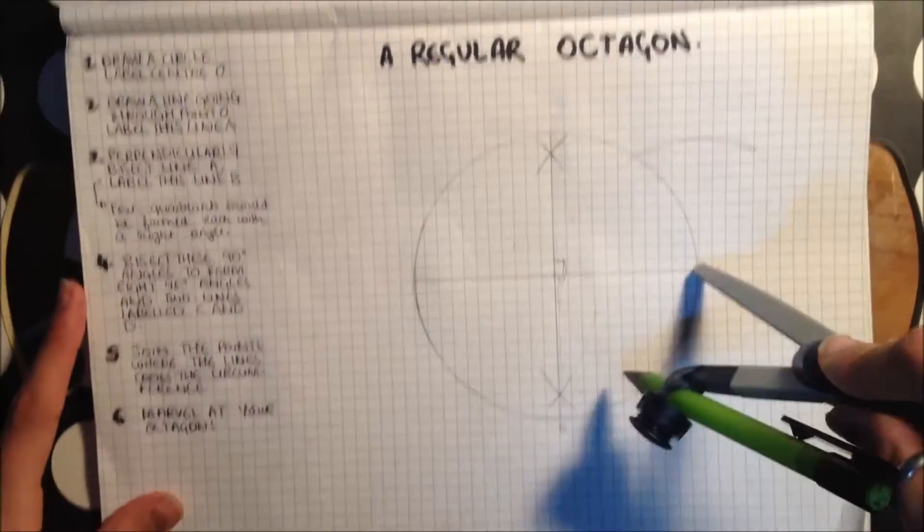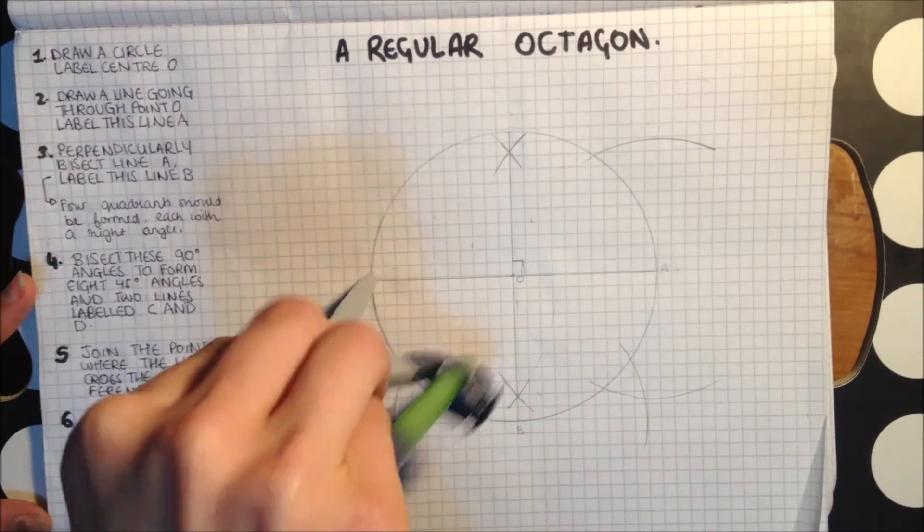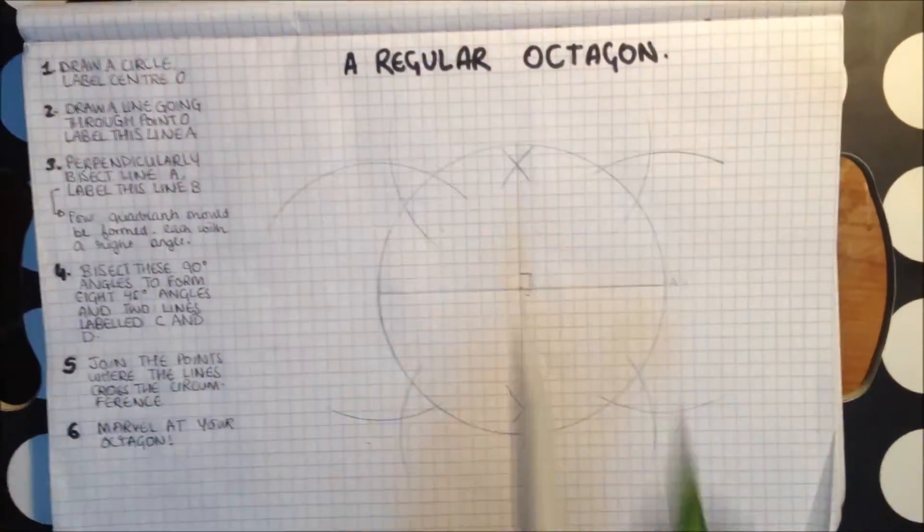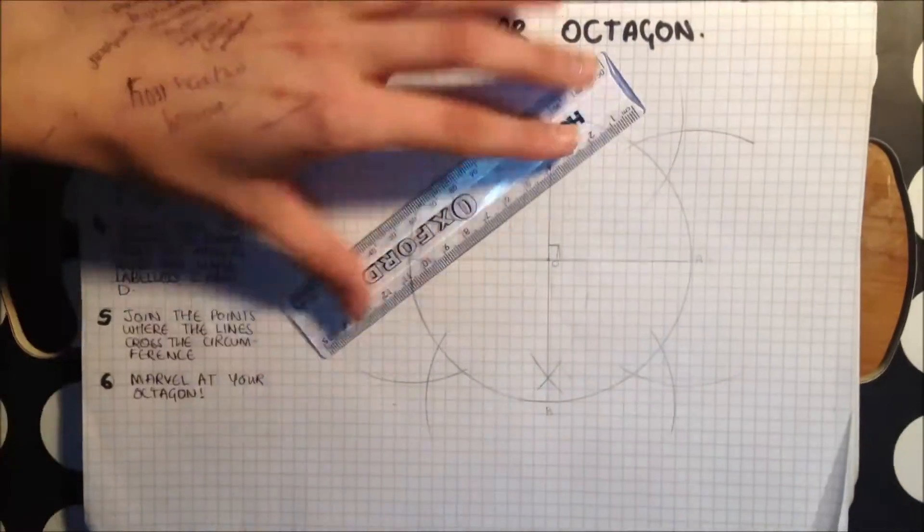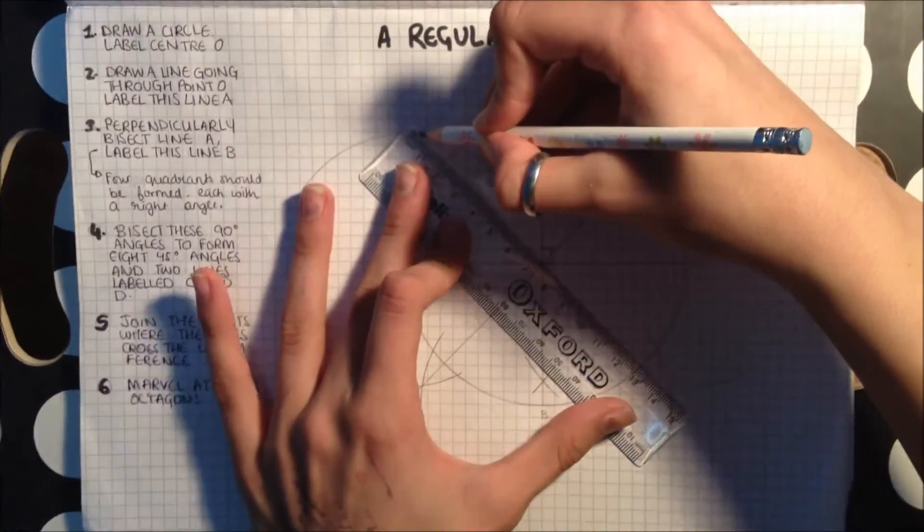After this, you should bisect the 90 degree angles to give you eight 45 degree angles in total. And after you have drawn the four lines that create these eight 45 degree angles,